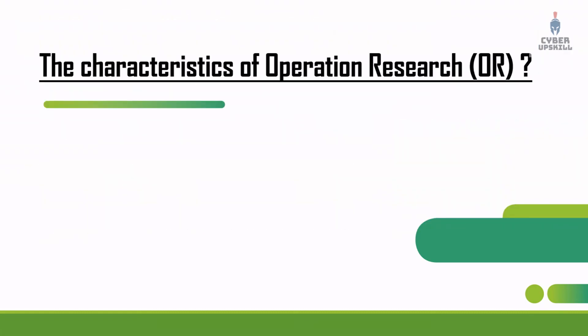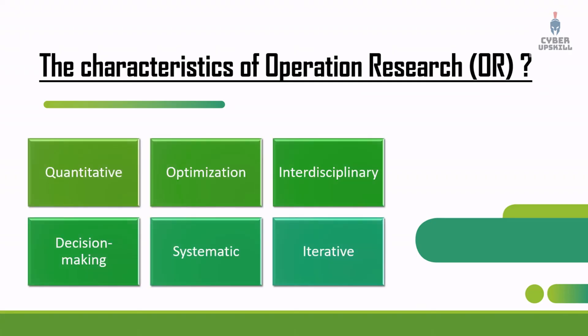Next, we will talk about the six characteristics of OR. The six characteristics are: quantitative, optimization, interdisciplinary, decision making, systematic, and iterative.